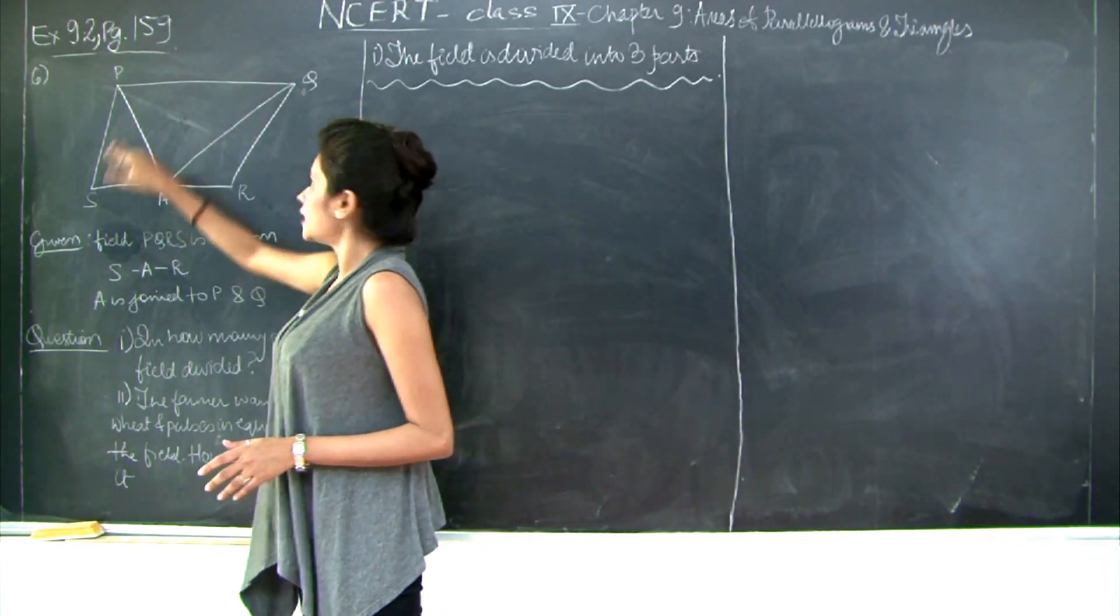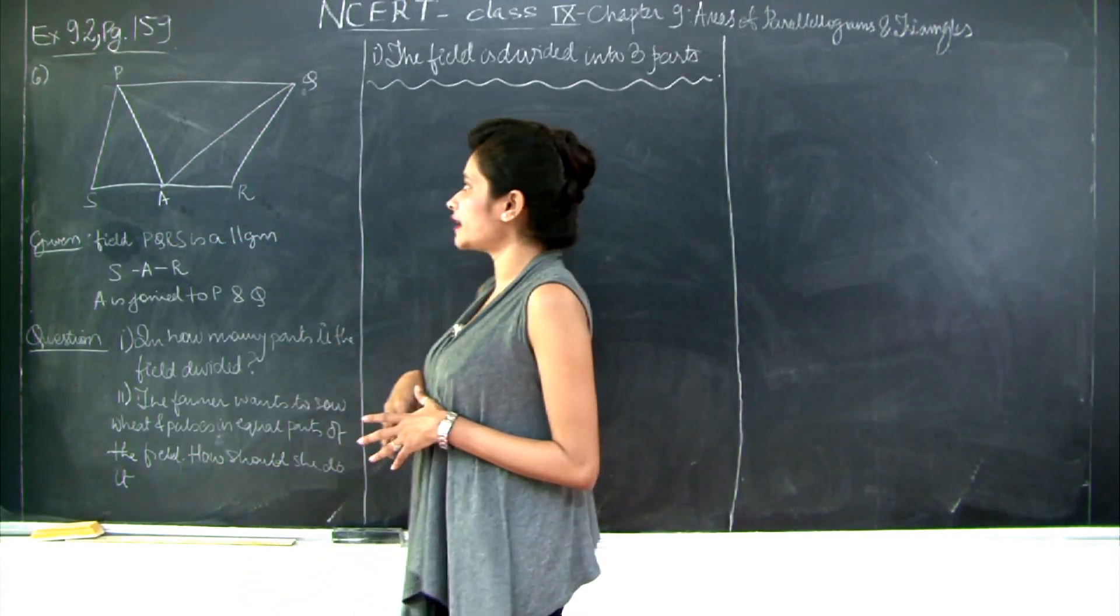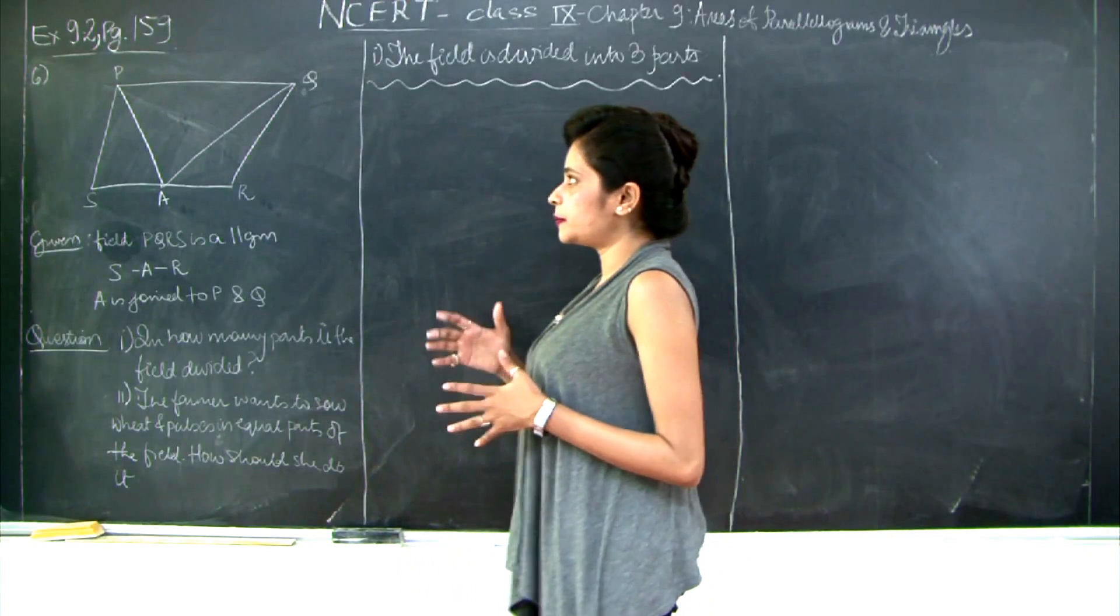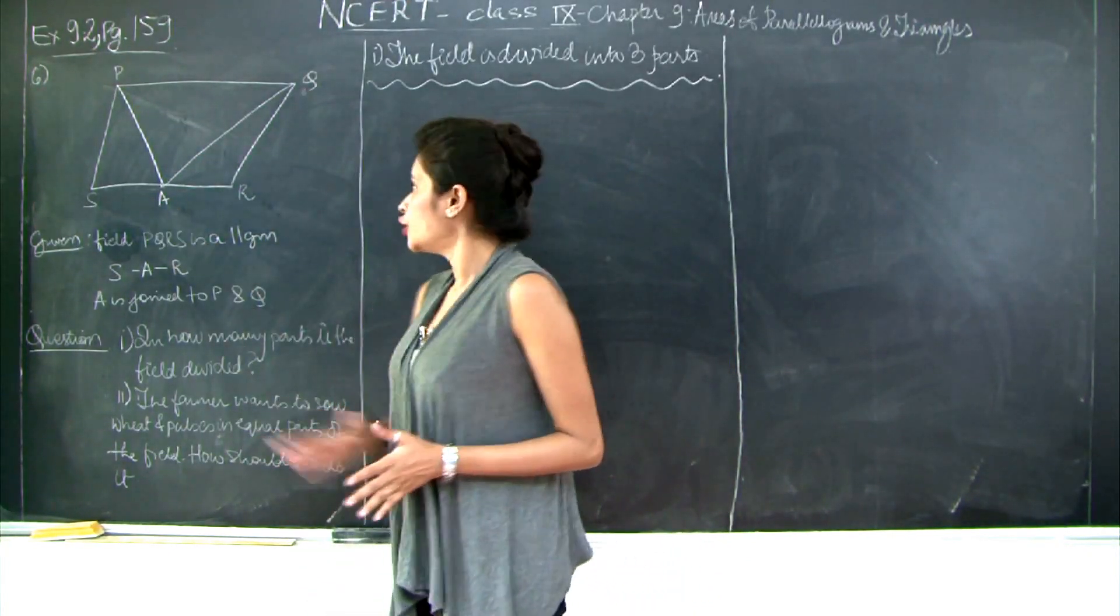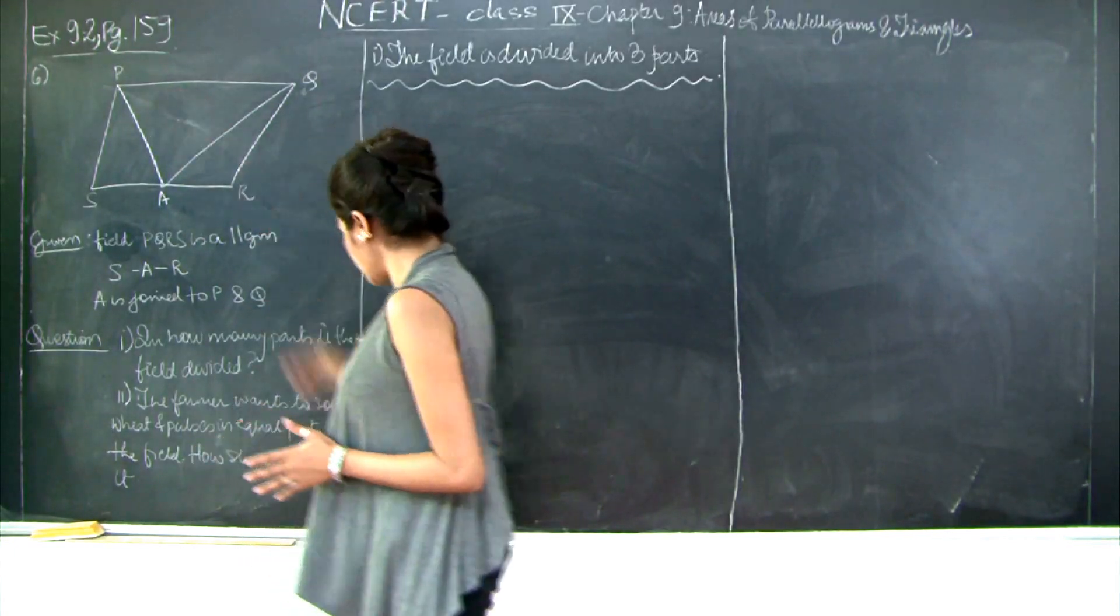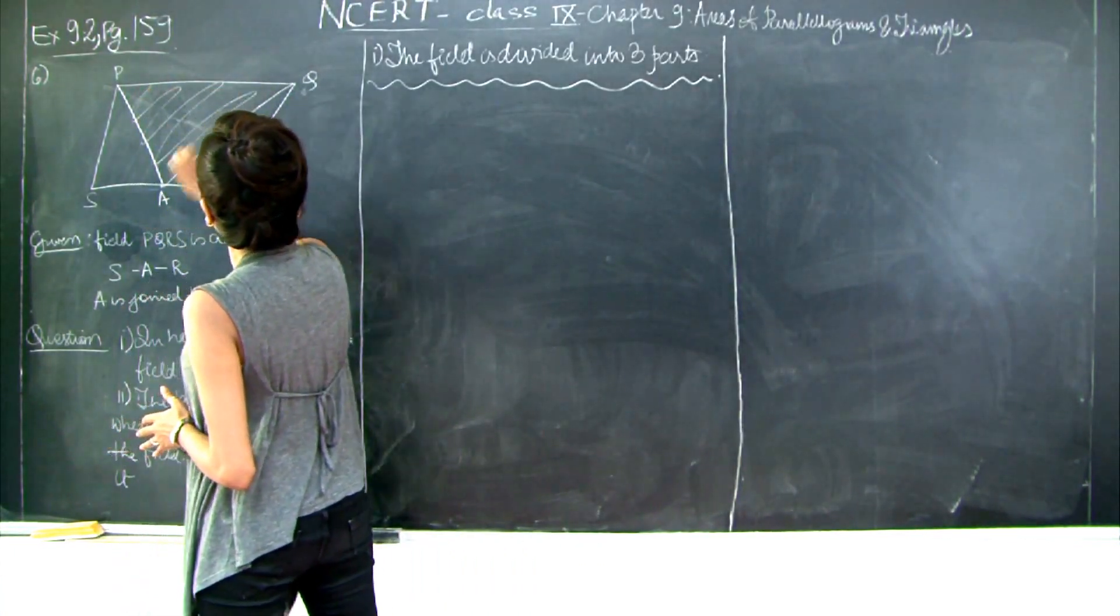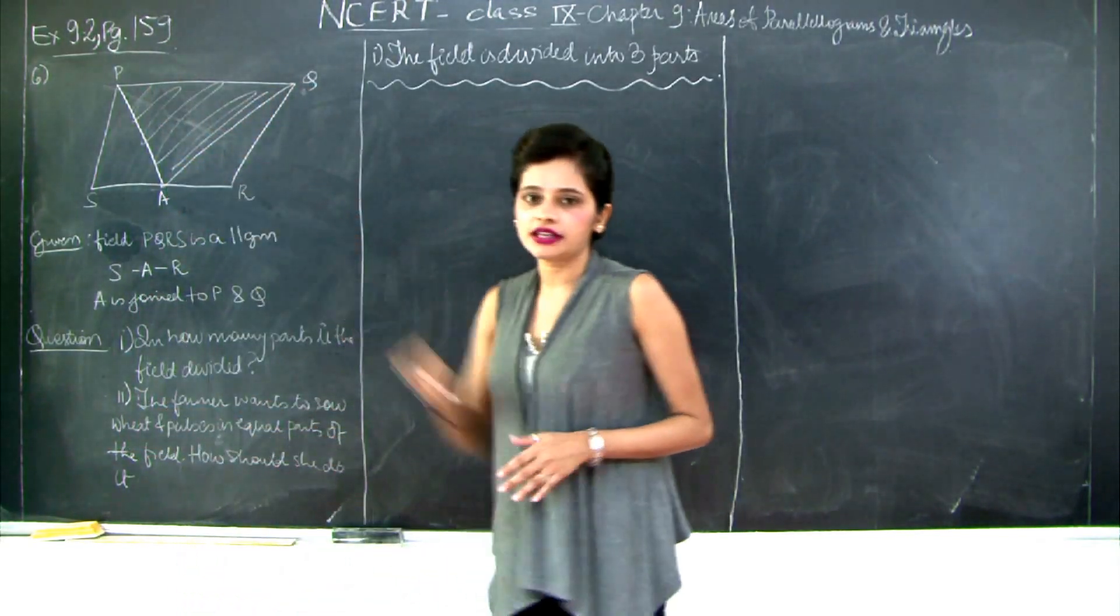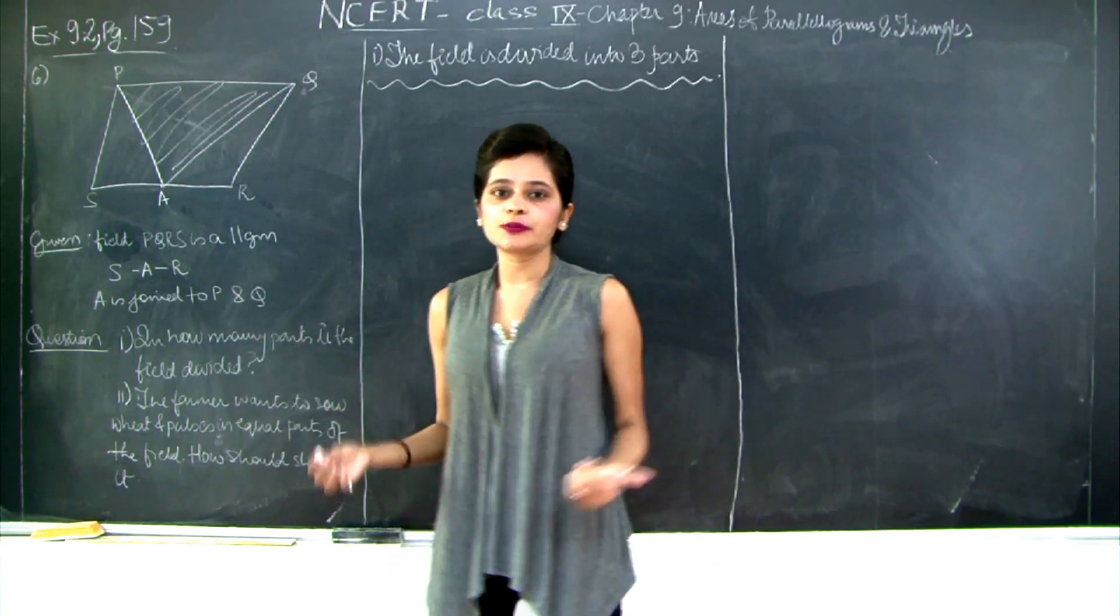Now if you notice, this triangle PAQ and the parallelogram PQRS have a common base PQ and they lie between the common parallels PQ and SR. Therefore the area of PAQ is half the area of your parallelogram PQRS. So now this portion is half of this parallelogram PQRS.